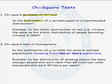For example, if we want to know whether the ethnic distribution of new U.S. citizens currently becoming citizens of the United States is the same as the ethnic distribution of people that became citizens in 1950, we would conduct a goodness of fit test. The hypothesized distribution in this example would be the ethnic distribution of people that were becoming citizens in 1950.